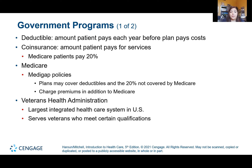A co-insurance would be, for example, if Medicare covers 80%, the co-insurance would be the 20% the patient pays. The Veterans Health Administration is the largest integrative healthcare system in the United States — not perfect, but it does help a lot of veterans who meet qualifications. The biggest takeaway here is to know the difference between Medicare and Medicaid.